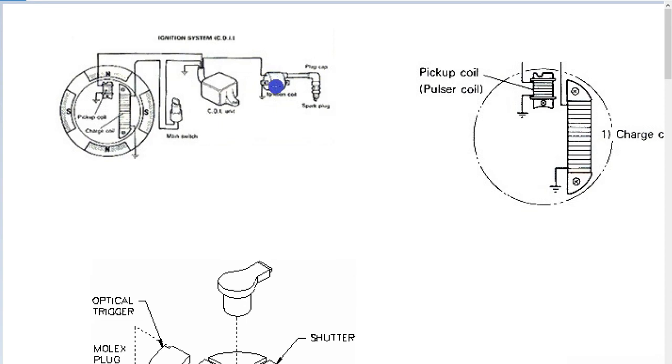So there's no primary field stored and collapsing into the secondary, so we don't have to have a high inductance coil. We can have a low inductance coil. So that's fundamentally the difference between inductive systems with points and without points with various kinds of solid-state switching sides.